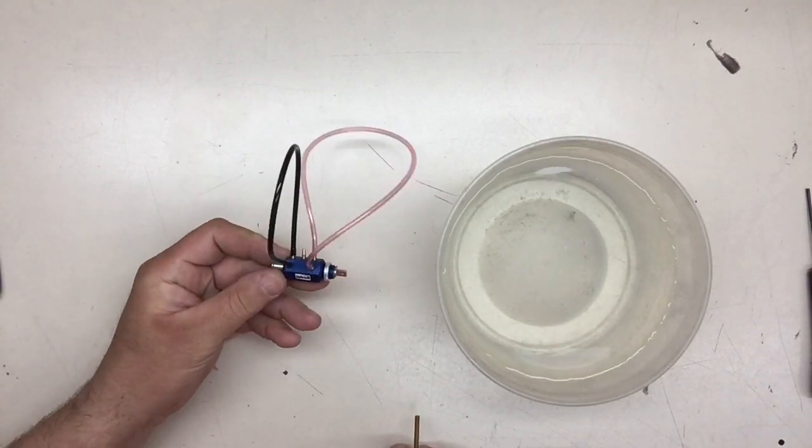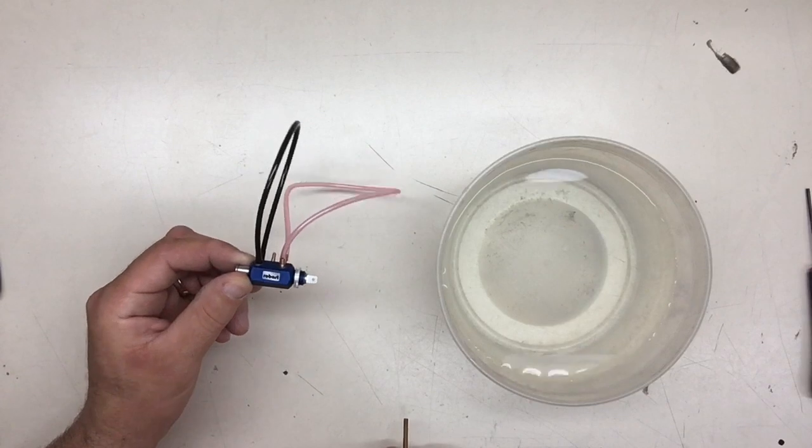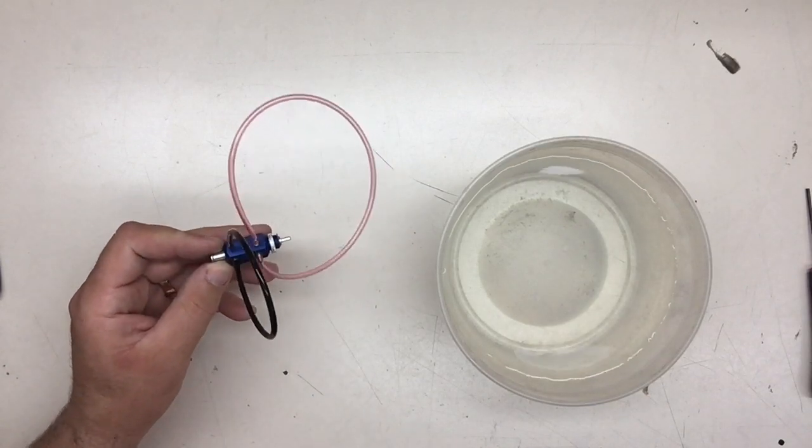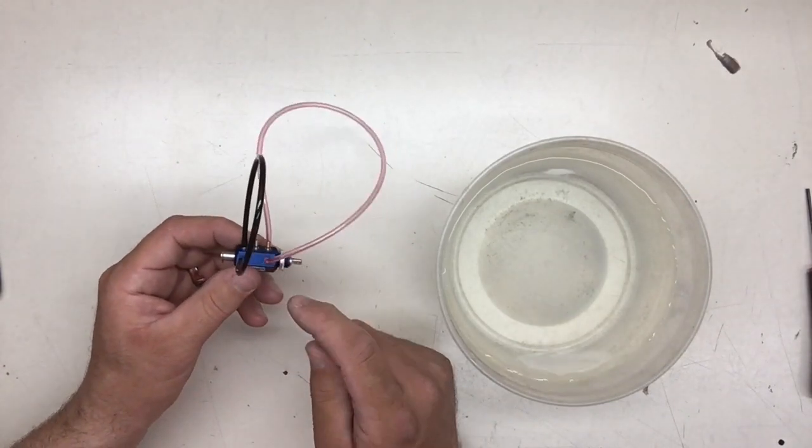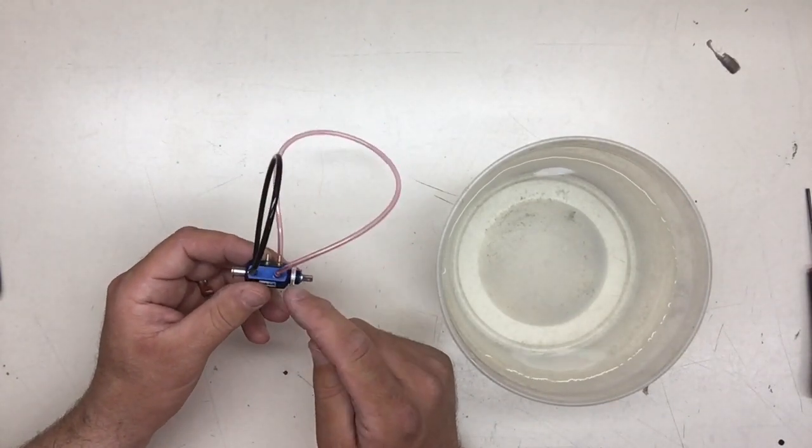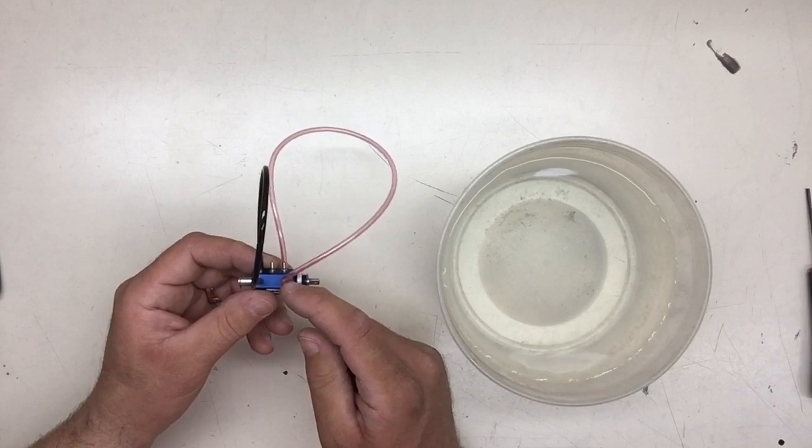So what we're going to start with is the blue valve. As you can see, how we're going to start our test is you're going to seal off both sides, both corresponding sides.